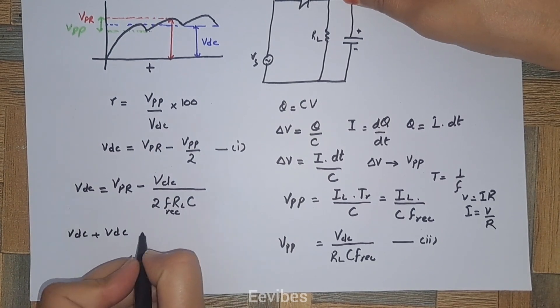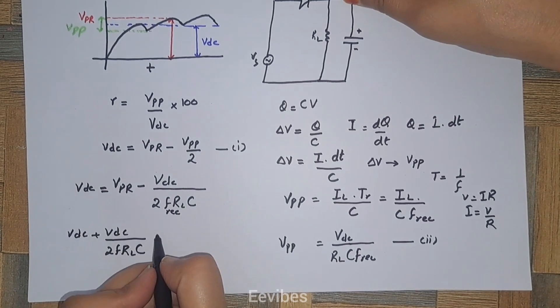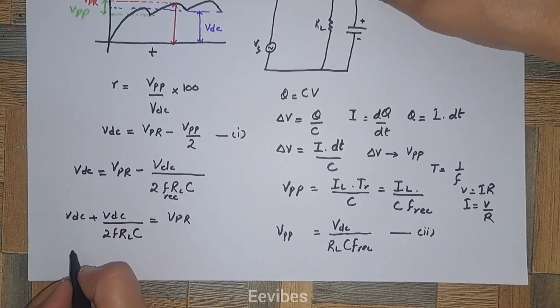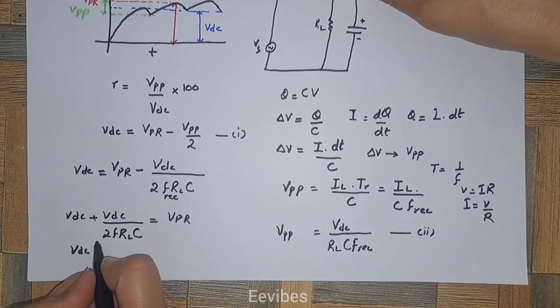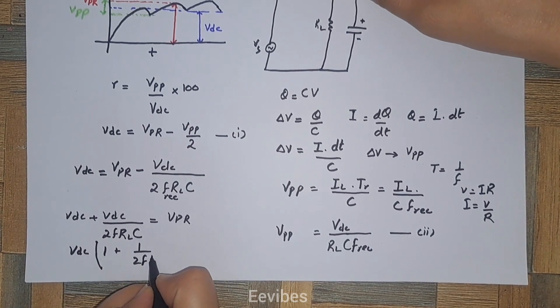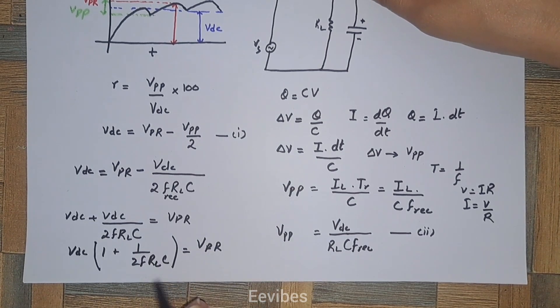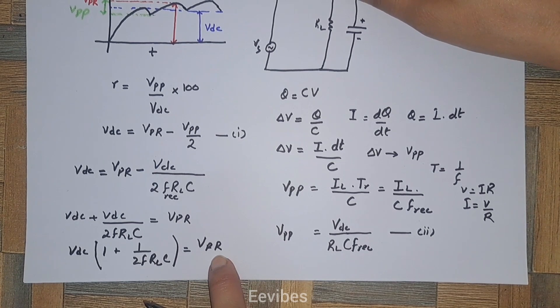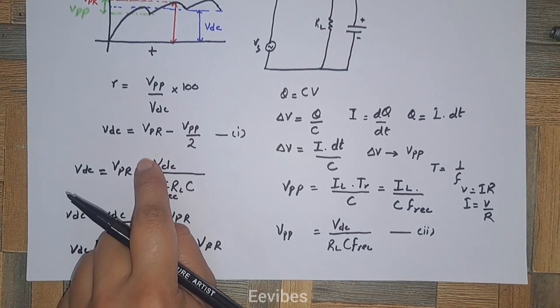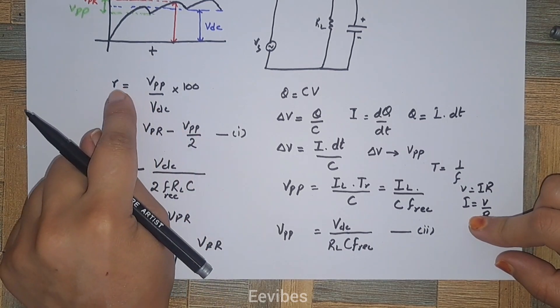Taking VDC common, we can write VDC times (1 plus 1 over 2 F RL C) equals V peak rectified. Once you have the value of V peak rectified, you can substitute it in this expression and determine the value of VPP. In this way, you will be able to find the value of the ripple factor.